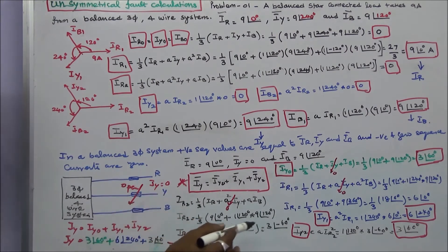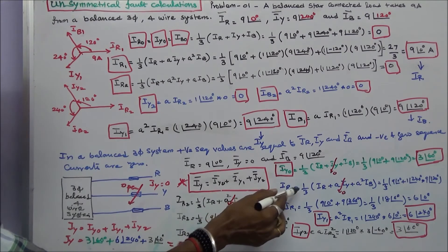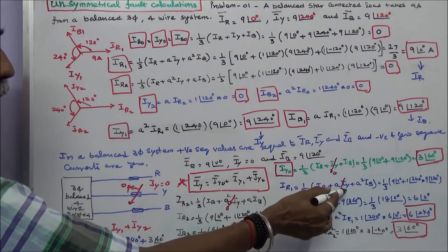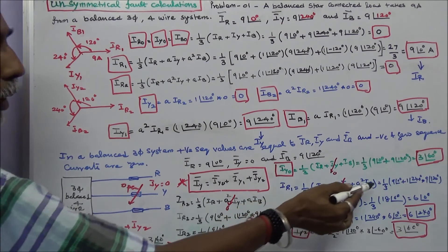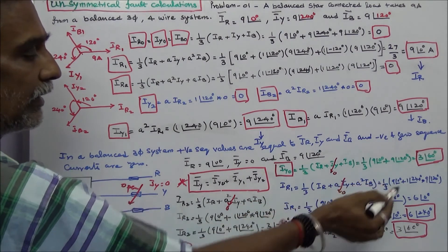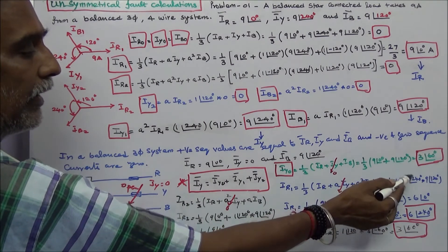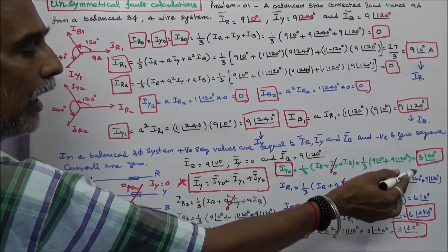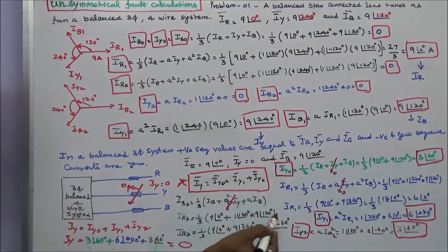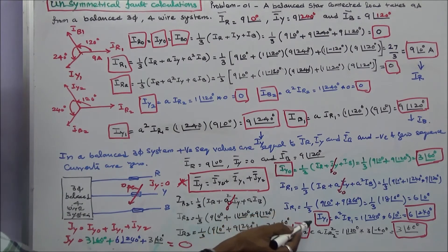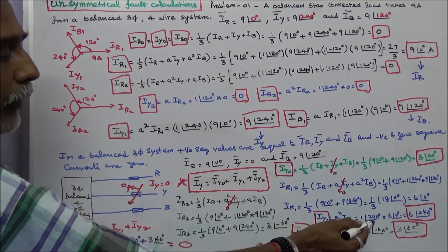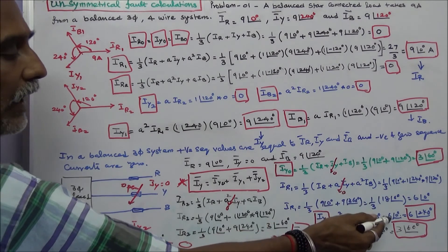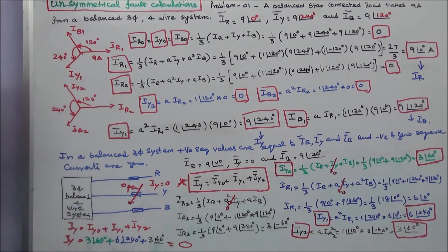Next, IR1 is equal to 1/3 into (IR plus A·IY plus A²·IB). Here A·IY is zero, so IR1 is equal to 1/3 into (IR 9 angle 0 degrees plus A² 1 angle 240 degrees into IB 9 angle 120 degrees). Therefore IR1 is equal to 6 angle 0 degrees. From IR1, we calculate IY1: IY1 is equal to A² into IR1, that is 1 angle 240 degrees into 6 angle 0 degrees, which equals 6 angle 240 degrees.